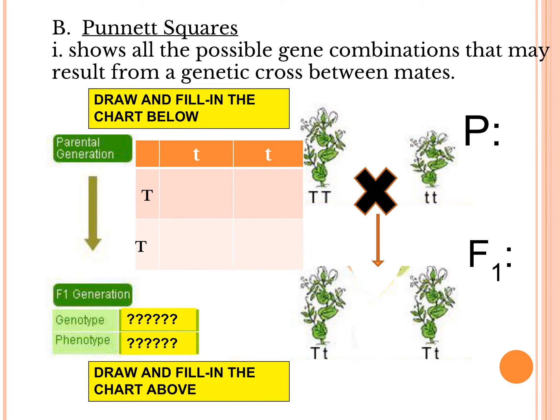Punnett squares. So what does a Punnett square actually do? Well, a Punnett square usually looks like just a square. So this is the main part to actually focus on. And it shows all the possible gene combinations that may result from the genetic cross between mates. So when there are two parents mating, the parental generation or parents mating, they will create offspring. But you don't necessarily know what the offspring's genes are going to be. So you use a Punnett square to figure that out.